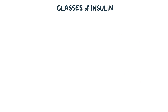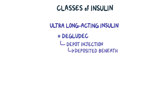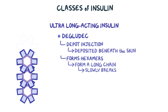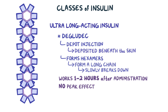A relatively new preparation of insulin is insulin degludec, which is considered an ultra-long-acting insulin and is formed by the deletion of a single amino acid from regular insulin. Degludec is a depot-injection, meaning the medication is deposited beneath the skin. It forms hexamers like regular insulin, but multiple hexamers combine to form a long chain which slowly breaks down into monomers. Its onset of action is between one to two hours with no peak effect. Its duration of action lasts up to 48 hours.